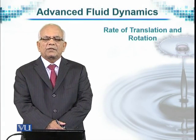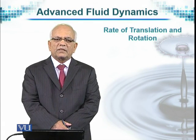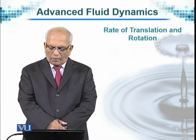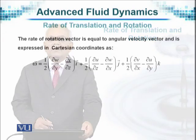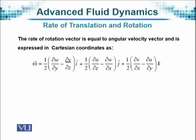The rate of translation is the distance traveled in a linear direction in a given time, and the rate of rotation is denoted by the omega vector. It has three components if the motion is three-dimensional, and if the motion is only one-dimensional it reduces to half of the partial derivative of W with respect to Y minus the partial derivative of V with respect to Z, which is the X-direction component denoted by the unit vector i.